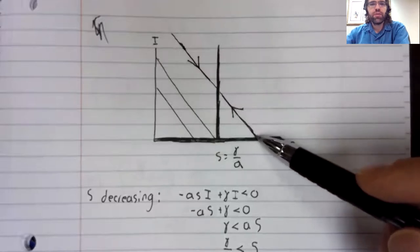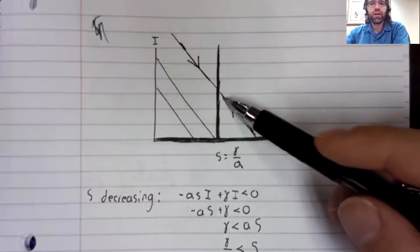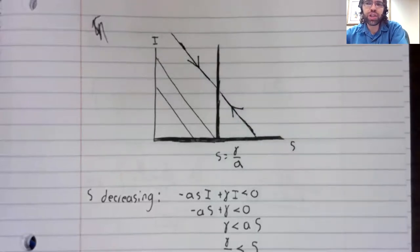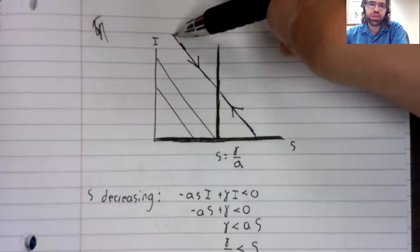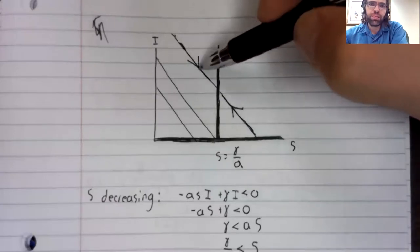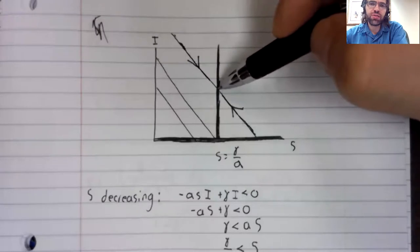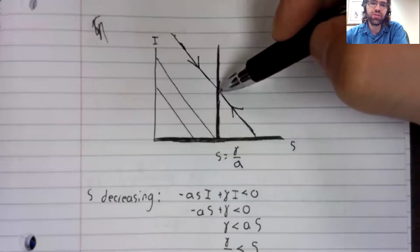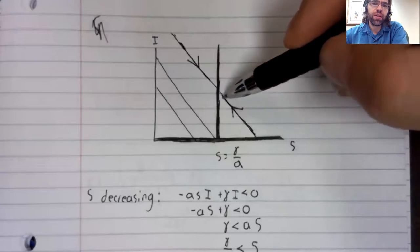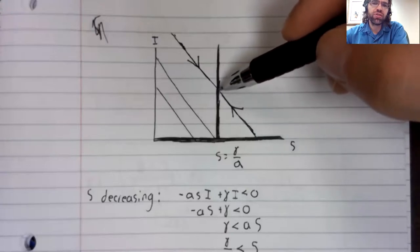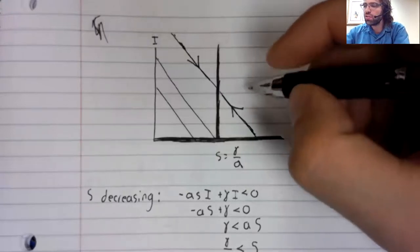And what happens if our initial condition is on the trajectory? Well, if it starts on the trajectory here, it converges to a fixed point on this line of fixed points. If we start on this trajectory down here, we converge to this fixed point on this line of fixed points.